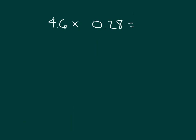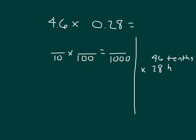Here is another problem. We have 4.6 times 0.28. So now we're actually multiplying tenths by hundredths. When we multiply tenths by hundredths, 10 times 100 is 1,000, so we get thousandths. If we use that unit form approach, that would be 46 tenths times 28 hundredths. When we multiply tenths by hundredths, we will get thousandths.